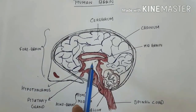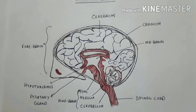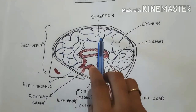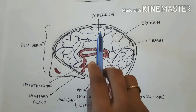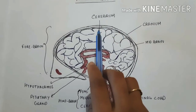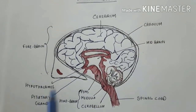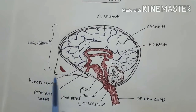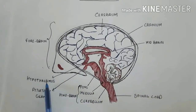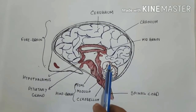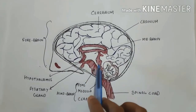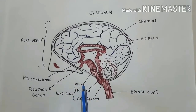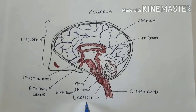The three parts of the brain are: forebrain, midbrain, and hindbrain. The forebrain consists of three parts: the olfactory lobe, which is present at the front of the brain; the cerebrum, which is the largest part of the brain and is divided into left and right cerebral hemispheres; and the diencephalon, which consists of the hypothalamus. The midbrain is a very small part. The hindbrain consists of pons, medulla, and cerebellum.